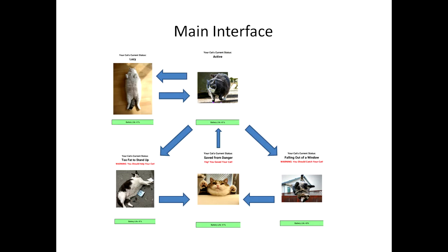When your cat is lazy, it can go to an active state. And from the active state, you can either go to the lazy, too fat, or falling state. From the too fat and falling state, you will be warned that you should probably save your cat from danger. Once you find your cat and press the button on his collar, you will be notified that he has been saved and will then return to active mode shortly after. As you can see on the bottom of each of the screens, you can view the battery life of your cat collar and charge it if needed.